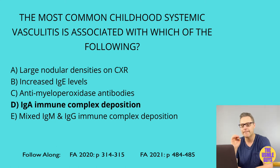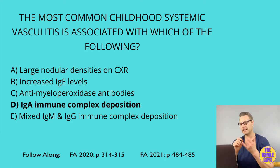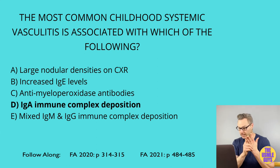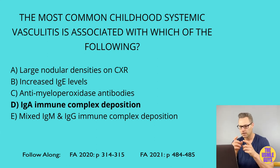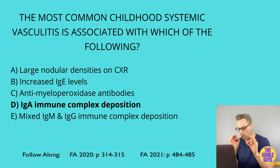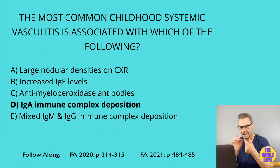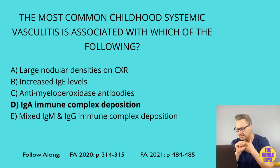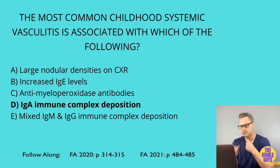Lastly, mixed cryoglobulinemia is characterized by a triad of palpable purpura, arthralgias, and weakness, and is likely caused by a viral infection. Peripheral neuropathy and kidney disease could also be present. Mixed IgG and IgM immune complex deposition is seen here, as are cryoglobulins.